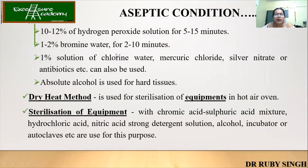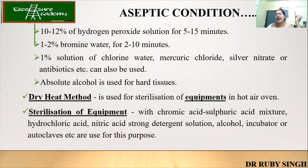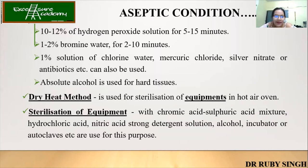Next, 10 to 12% hydrogen peroxide solution again for 5 to 15 minutes, or 1 to 2% bromine water for 2 to 10 minutes, or 1% solution of chlorine water. Mercury chloride, silver nitrate, or antibiotics can also be used. Absolute alcohol is used for hard tissues. All these chemicals are meant for sterilization of plant materials. From my experience, I have used sodium hypochlorite. Mercury chloride and silver nitrate were avoided since they are toxic and if not handled properly, you might get poisoning.